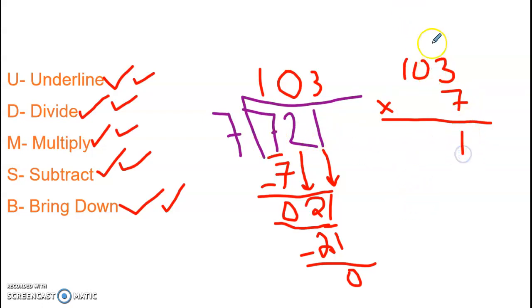Alright, 7 times 3 is 21. Carry the 2. Bring down the 1. 7 times 0 is 0. Plus 2 is 2. And 7 times 1 is 7. Ooh! 721.